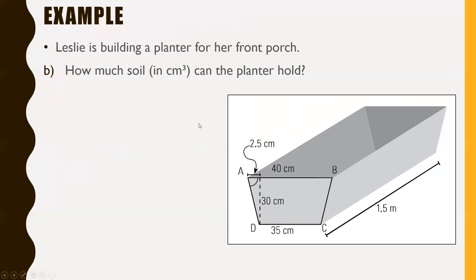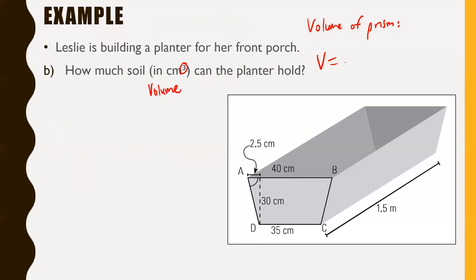Next: how much soil in centimeters cubed can the planter hold? Since it says centimeters cubed, it's really asking for a volume. Volume is useless without a formula, so have a look at your formula sheet. On the back side of your formula sheet, there's a formula for the general volume of a prism: V equals area of the base times the height.